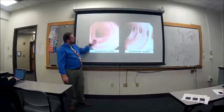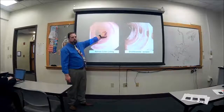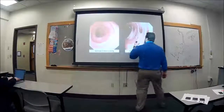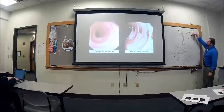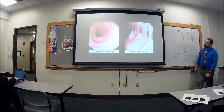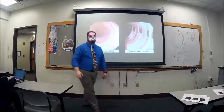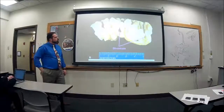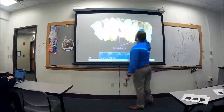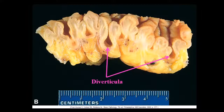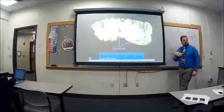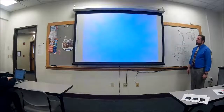If you put a scope through the colon normally, you see a nice smooth wall. But in a patient with diverticula, you'll see holes — one, two, three, four different diverticula visible through the scope. Here's a patient picture of a removed section showing the colon wall with two diverticula visible; they appear flattened from the outside.